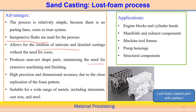Extra machining operations are not required in the lost foam process, and dimensional accuracy is very good because it exactly replicates the size of the lost foam pattern. This process is applicable for a wide range of materials including aluminium, cast iron, and steel. An example is the engine block and cylinder head — a very complex structure with many intricate details that can be produced using the lost foam casting process.